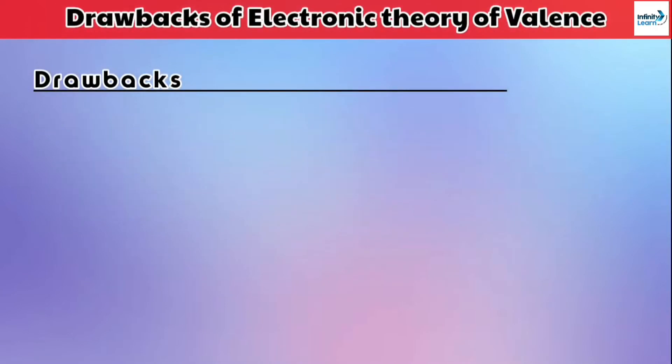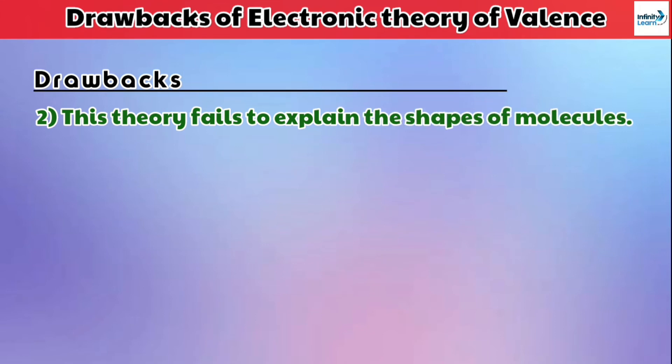Now the second drawback is: this theory fails to explain the shapes of molecules. This theory was unable to explain why these atoms connect to each other at certain different angles and form different shapes. For example,